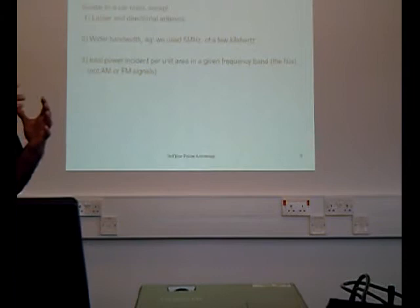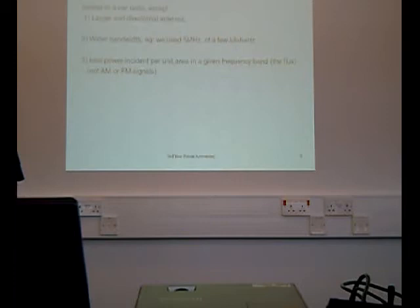Now for some basic radio astronomy, the antenna is just like a car radio, but the antenna is much larger and directional, because we don't want to pick up signals from the ground. It's got a wider bandwidth, about 5 MHz, which is what we use, compared to a few kHz for a car radio. And we're only interested in the total power incident on the antenna, instead of looking for AM or FM signals.